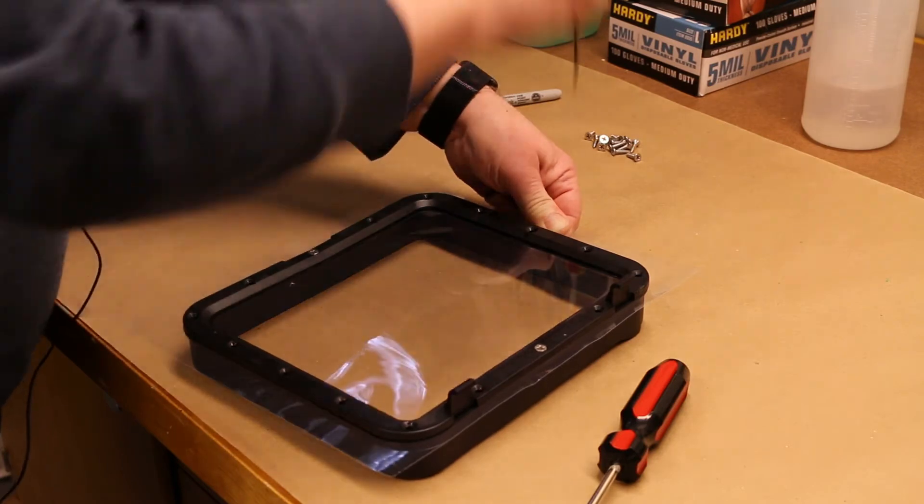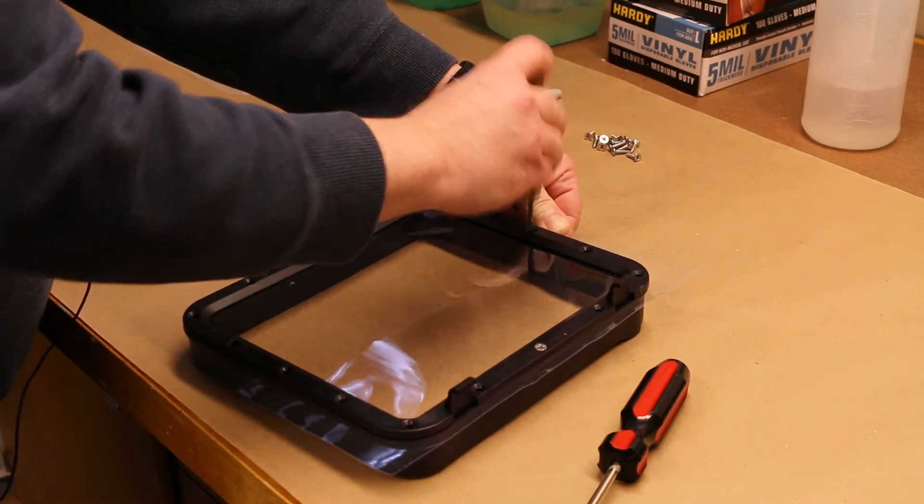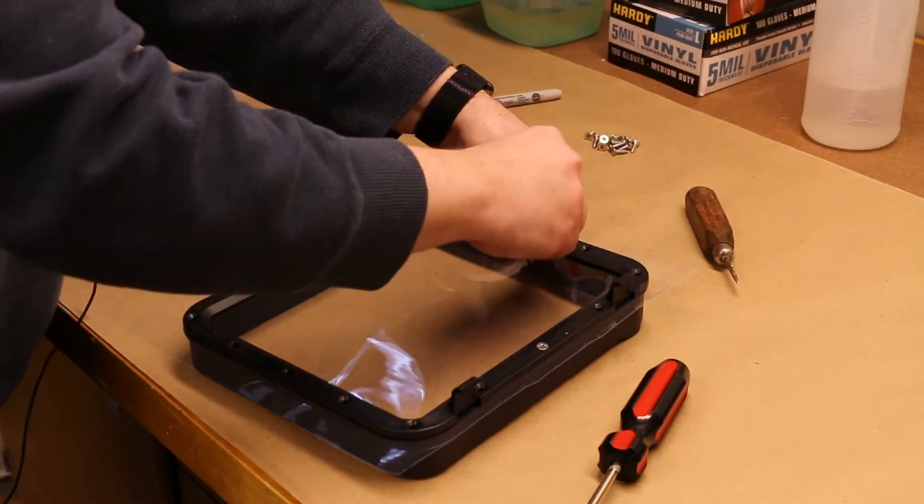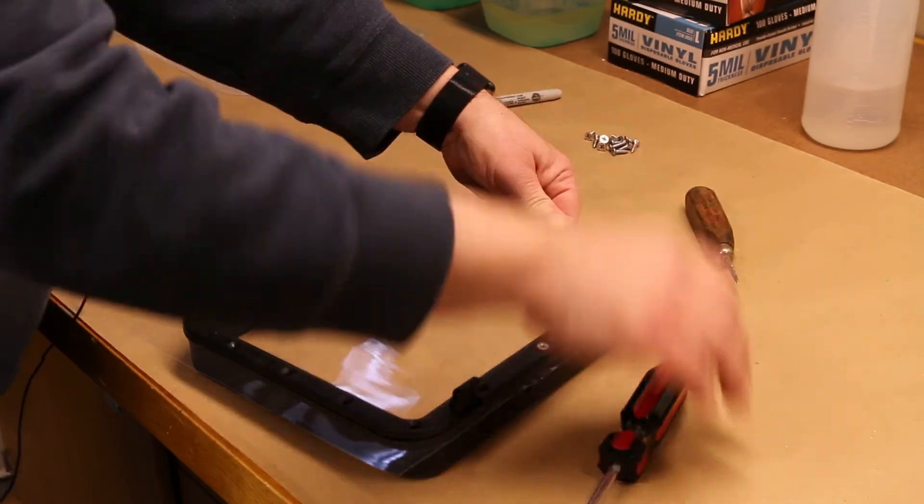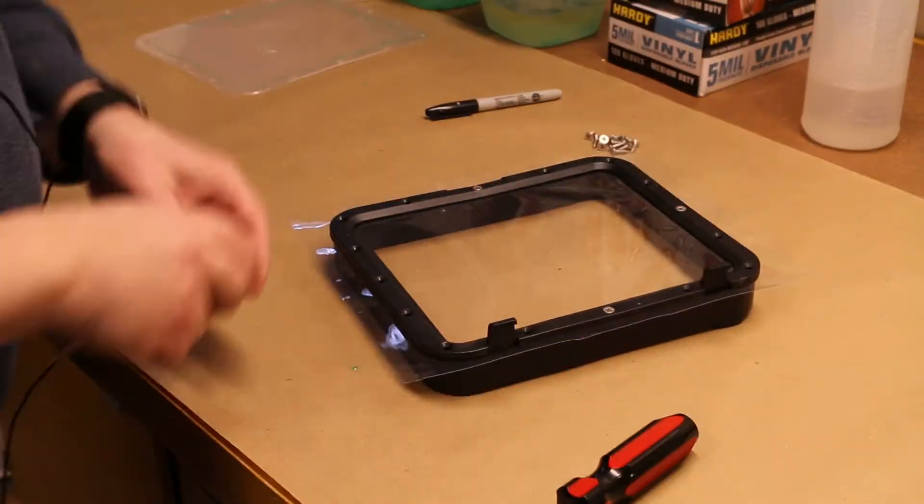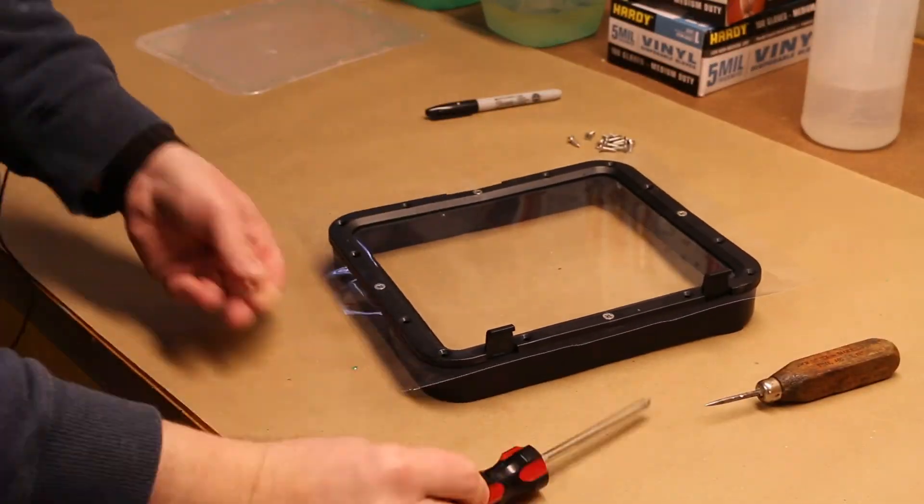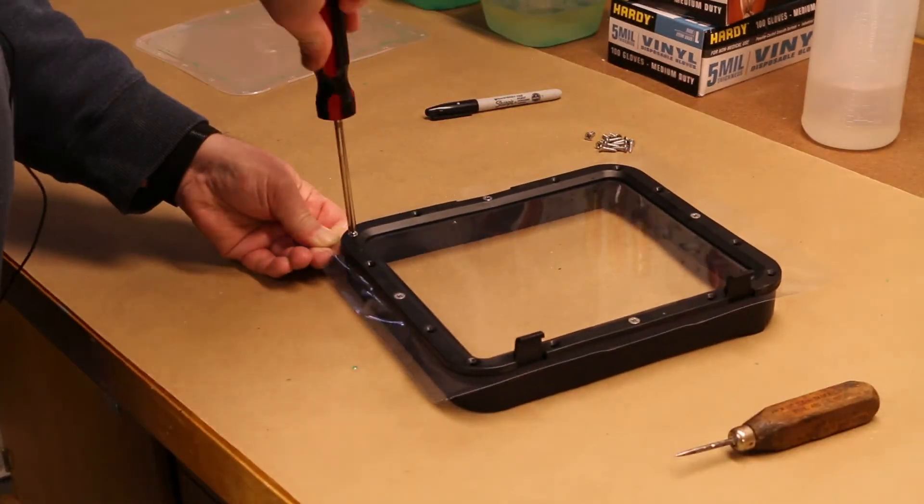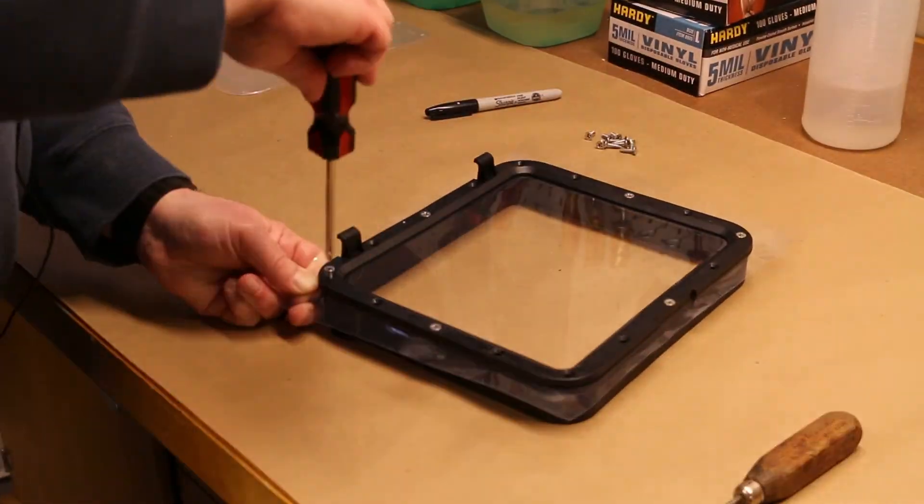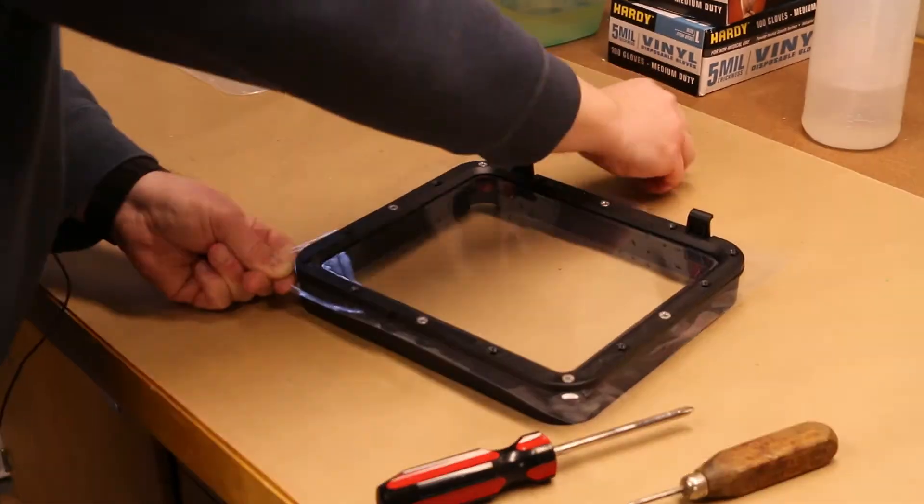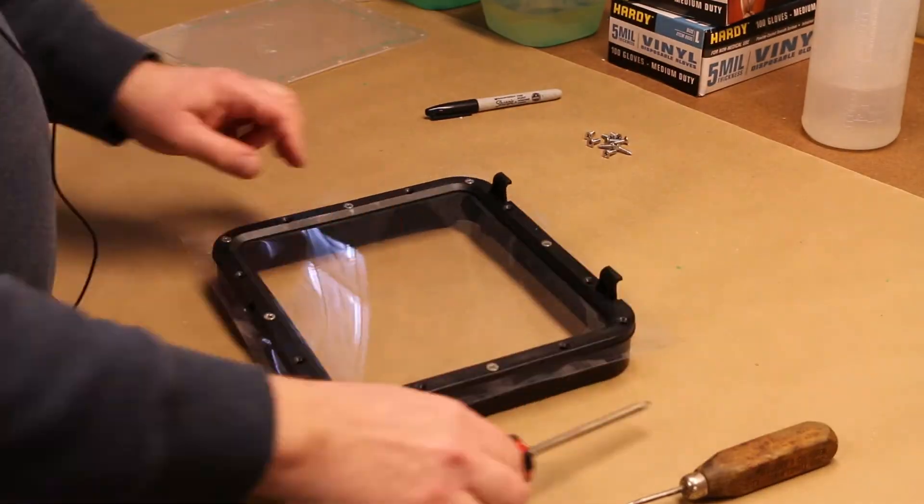From there I put the screws in the ends of the vat, again pulling the film tightly, punching a hole, and installing the screw. I continued to install the screws, alternating end for end, side for side, until they were all in, making sure to pull the film tightly with each screw.